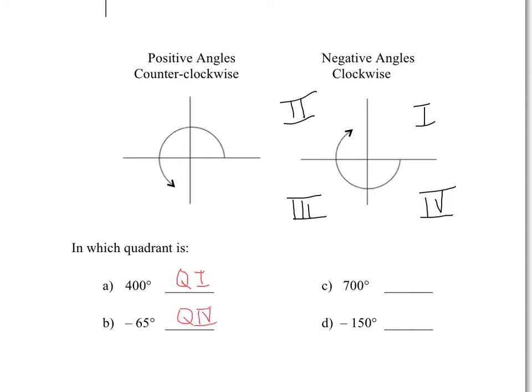700 degrees. Well again, you would travel the full 360. If you want to figure out exactly where we are, just keep going 90 degrees. So 360, 360 plus 90 is 450, plus 90 is 540, plus 90 is 630. So 630, 720. Your 700 degrees would be right there, almost two full revolutions. You would fall in quadrant four.